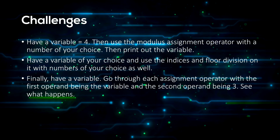Now for some challenges for you to do by yourself. Have a variable equals 4, then use the modulus assignment operator with the second operand — a number on the right-hand side of the assignment operator — as a number of your choice, then print out the variable. Have a variable of your choice and use the indices and floor division on it with a second operand of your choice. Finally, have a variable and go through each assignment operator with the first operand being the variable and the second operand being 3, and see what happens.